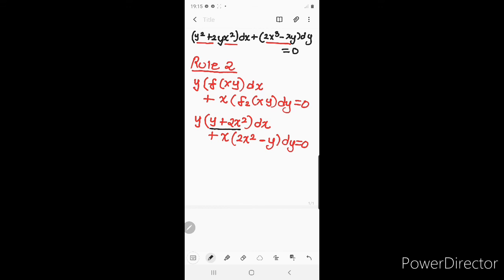Now if I see these terms, y + 2x² is not a function of xy, and 2x² - y is not again a function of xy. Both need not be strictly functions of xy; even if one is not a function of xy then we are done. So rule two is not applicable in this case.